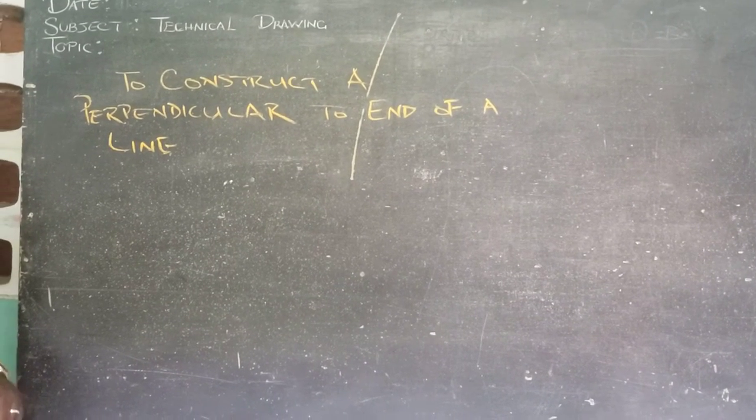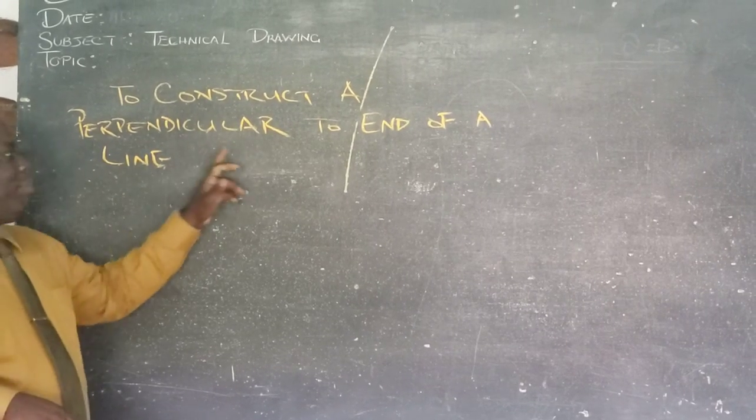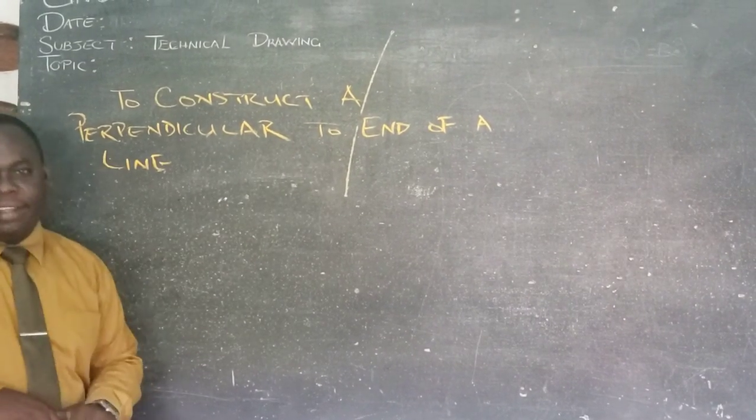Alright, so this is now our third drawing. We're going to be constructing a perpendicular to the end of our given line.